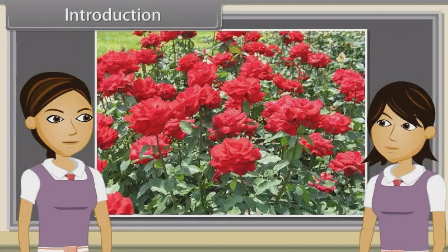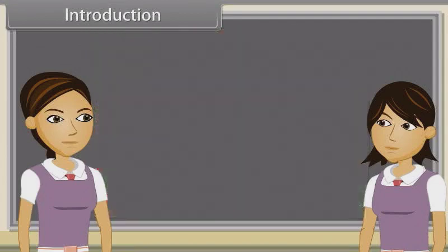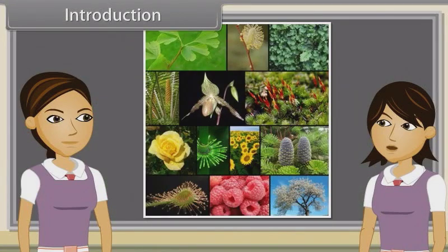Sharmila, in a few words, define a plant. Yes, any member of the kingdom plantae, comprising multicellular organisms, and produces their own food by the process of photosynthesis.